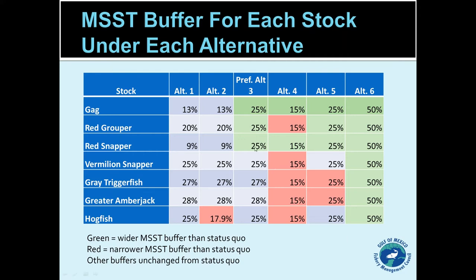Alternative five would be a fixed 75% for everything. The three stocks that would get a broader buffer under the preferred alternative would still get that broader buffer, but two stocks would get a narrower buffer: gray triggerfish, currently at 27%, would narrow slightly to 25%, and greater amberjack, currently at 28%, would also narrow to 25%. Vermilion snapper and hogfish would be unaffected.